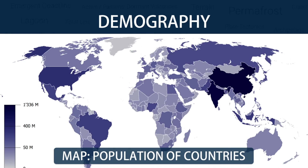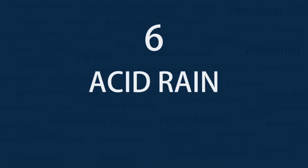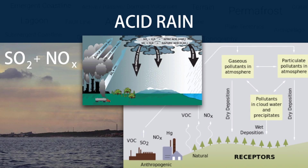Demography is the study of statistics such as births, deaths, income or the incidence of disease which illustrate the changing structure of human populations. Acid rain is a rainfall made so acidic by atmospheric pollution that it causes environmental harm, mainly to forests and lakes. The main cause is the industrial burning of coal and other fossil fuels, the waste gases from which contain sulfur and nitrogen oxides, which combine with atmospheric water to form acids.